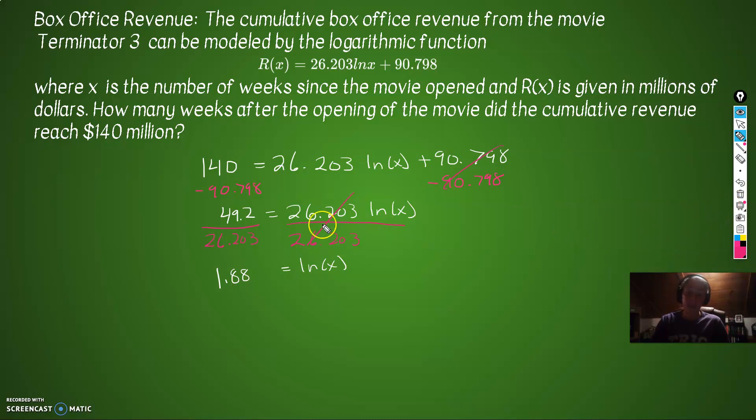How do we get rid of the ln? We're going to use e. We're going to exponentiate both sides, and then that e to the ln will cancel because they're inverses. So x will drop out on the right. And on the left, we have to figure out what e to the 1.88 is, and we get 6.55. So what's the question asking? x is the number of weeks since the movie opened. So when will cumulative revenue be 140 million? 6.55 weeks after opening, and Terminator will make a bunch of money.